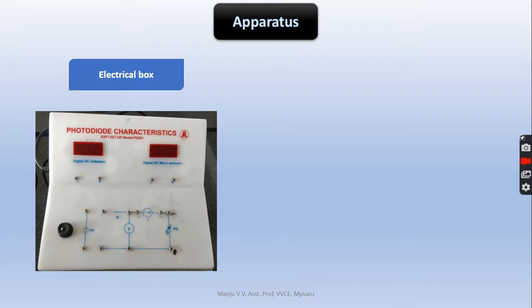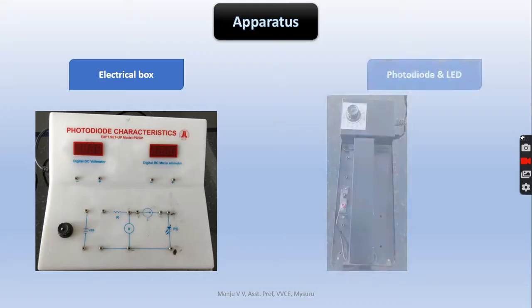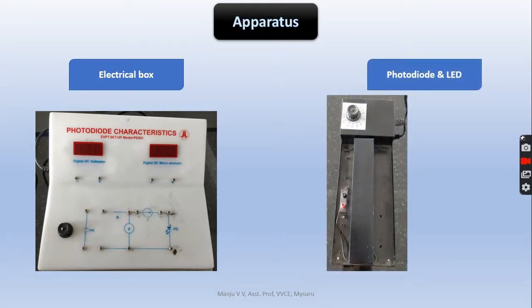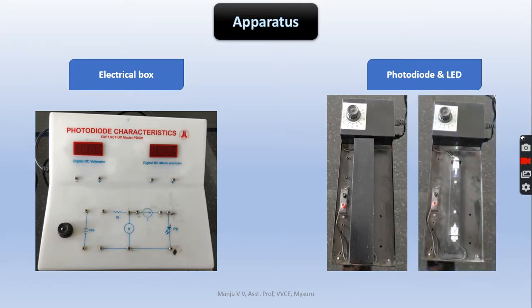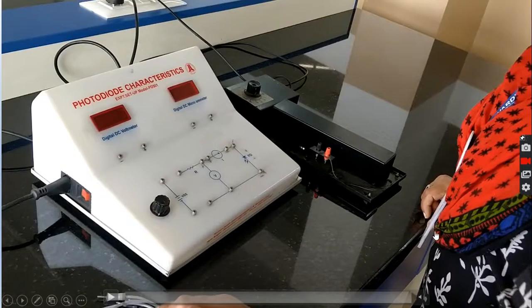The apparatus required for this experiment is an electrical box, a photodiode, and an LED. Once the box cap is removed, we can see the LED and the photodiode, which has both positive and negative terminals.